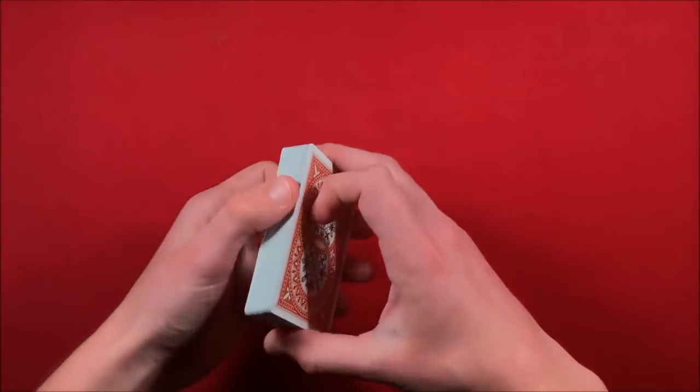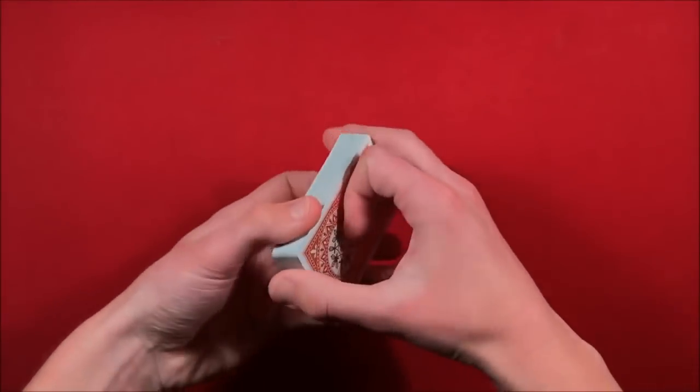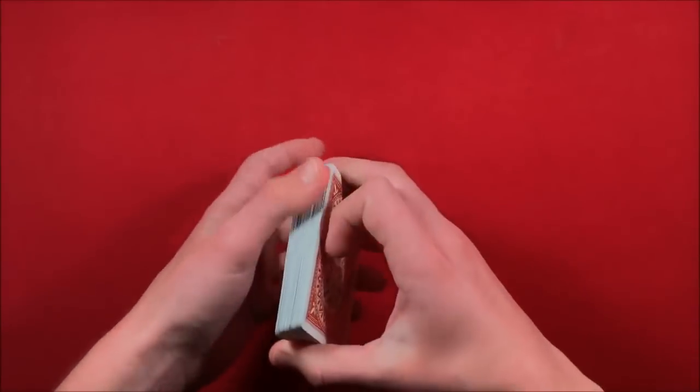You can use these in a lot of different tricks. So to begin, the first thing you want to do is you could have the spectator shuffle up a borrowed deck or anything. They could shuffle it up, and at this point all you have to do is get a double lift.